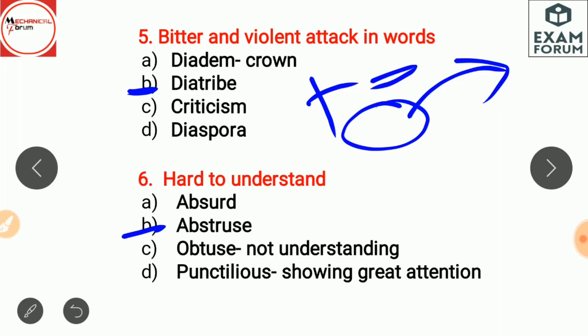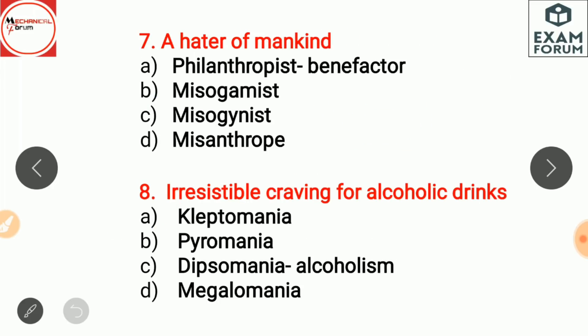Hard to understand is obtuse. Absurd means illogical, ridiculous, or something that makes no sense. Obtuse refers to a person who doesn't want to understand. Punctilious means showing great attention to detail or correct behavior.